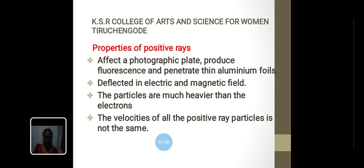The positive ray particles are much heavier than the electrons. The velocities of all the positive ray particles are not the same. The velocity of these rays range from 10 to the power 5 to 10 to the power 6 meters per second.